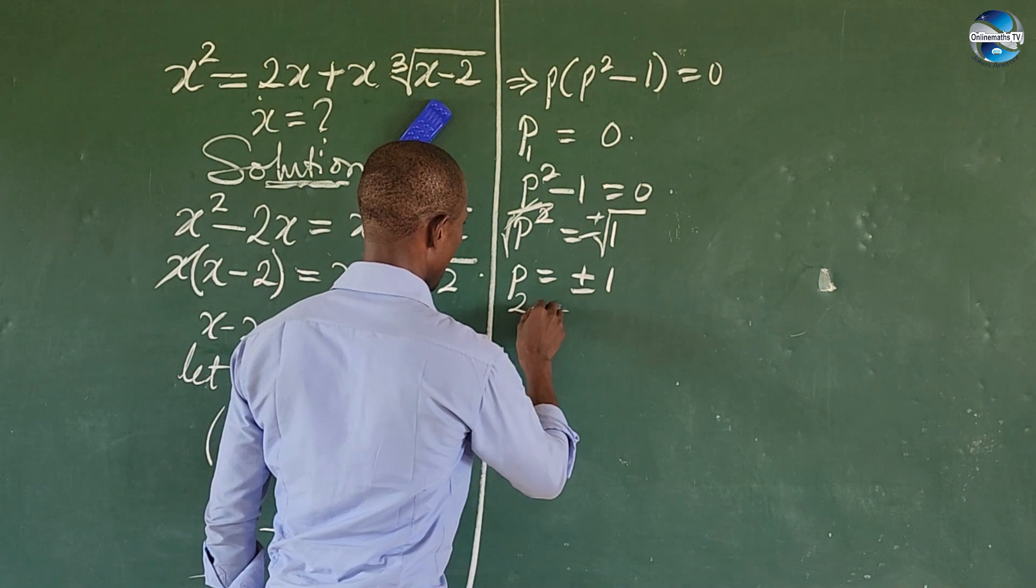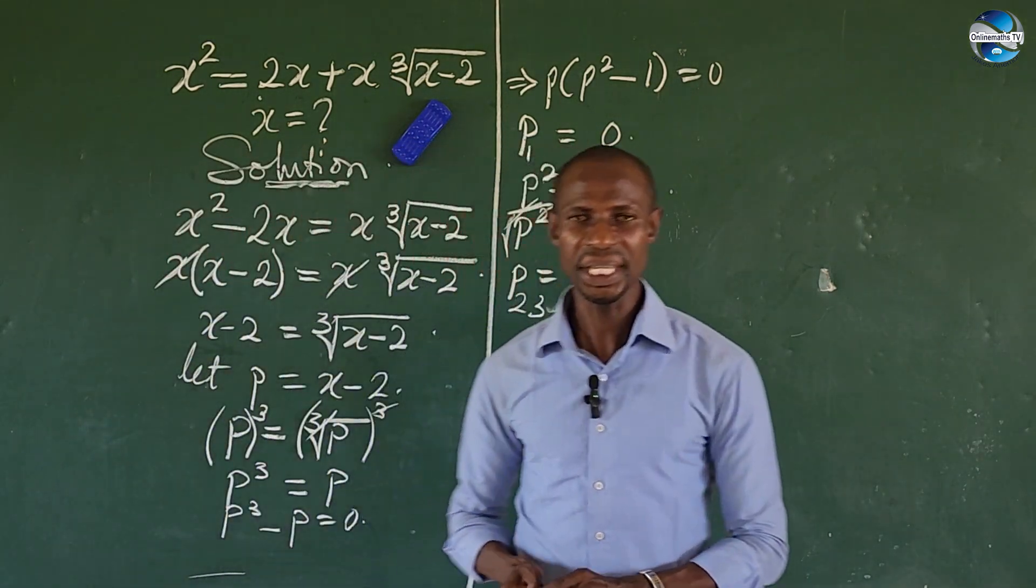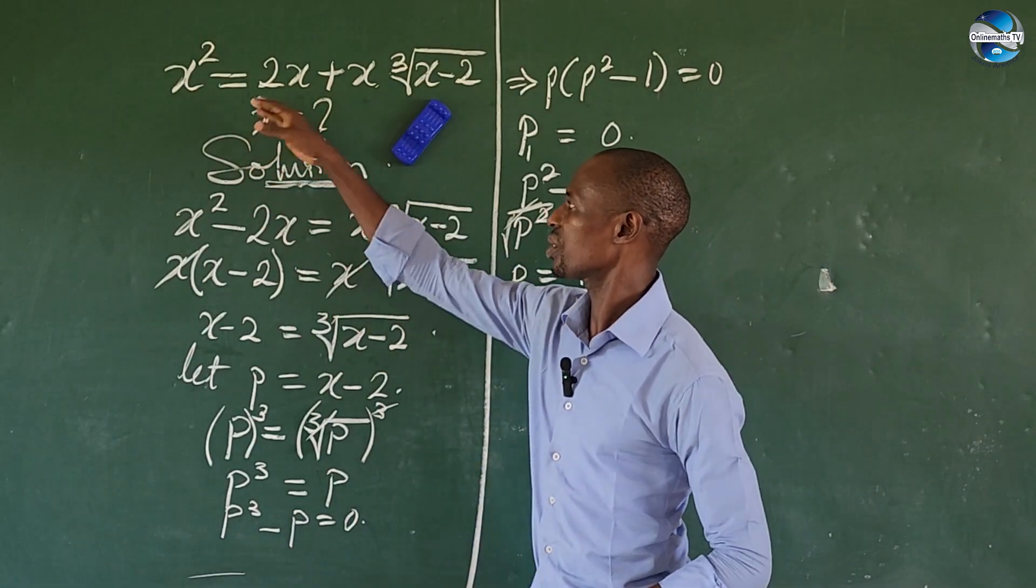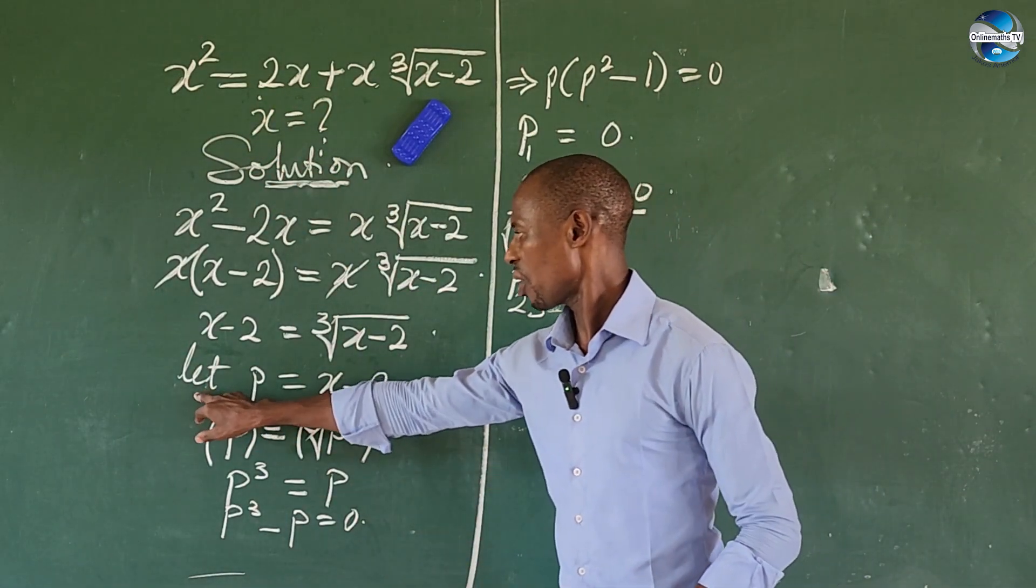Now remember, at first we don't have p in the system. Look at our original equation, we don't have p there. So how come we have p here? Recall we said at this point: let p be equal to x minus 2.